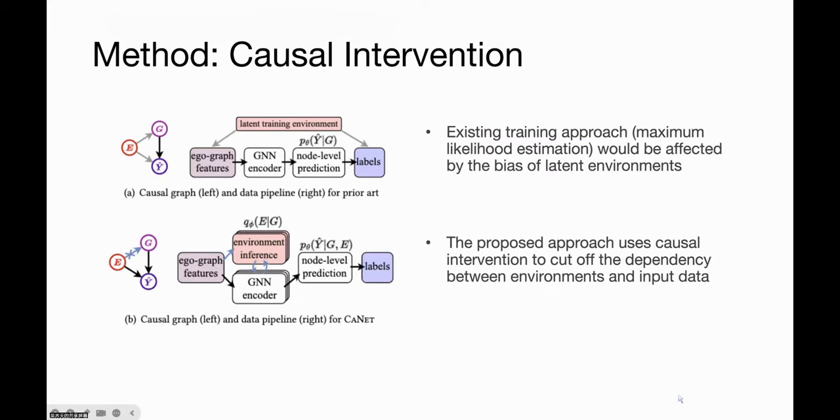In general sense, the environment reflects the context information in data, and the training process of graph representation models would capture the environment-sensitive relations that would impair the generalization performance.